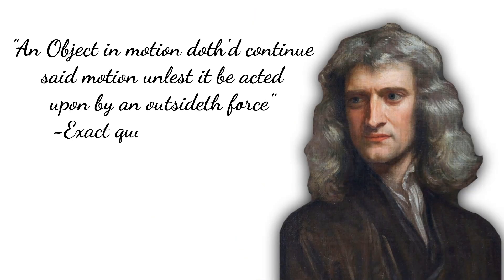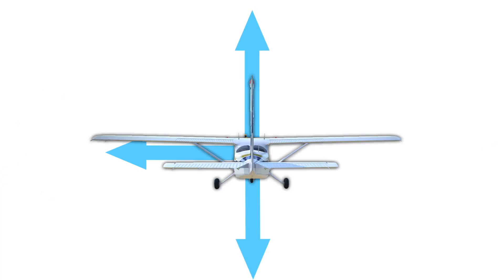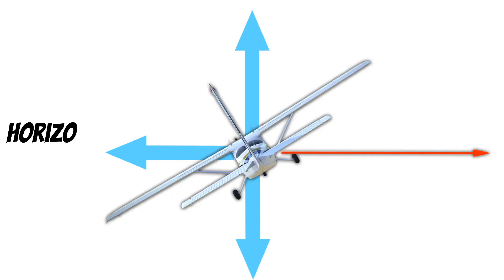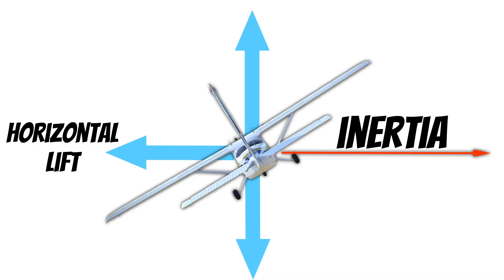Newton's first law of motion basically states that an object in motion will continue that motion until acted on by an outside force. In other words, a moving object tends to resist changes in its state of motion. This means that when you roll an airplane to turn and convert vertical lift to horizontal lift, the airplane is going to resist that movement — that's just inertia resisting our change in motion, and it directly opposes the movement of our aircraft.